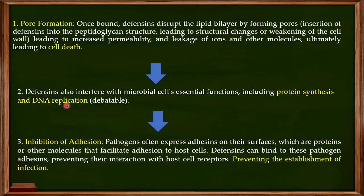Another important function of defensins is that they inhibit the adhesion of pathogens to host cells. When pathogens want to infect a cell, the first thing they must do is interact with those cells — adhesion is a very important component of infection. Pathogens often express adhesins on their surfaces, which are proteins or other molecules that facilitate adhesion to host cells. Defensins can bind to these adhesins, thereby preventing their interaction with host cell receptors.